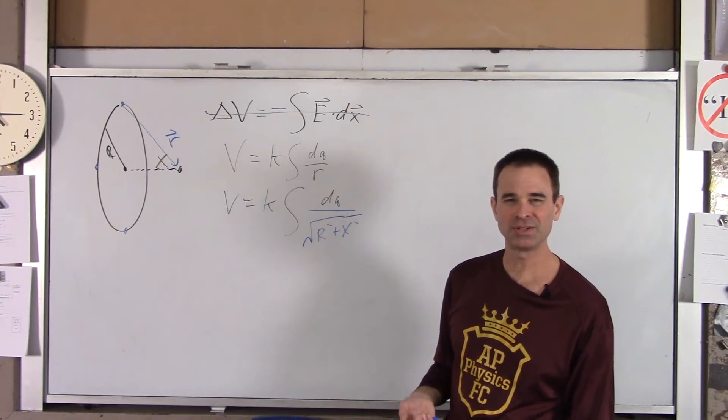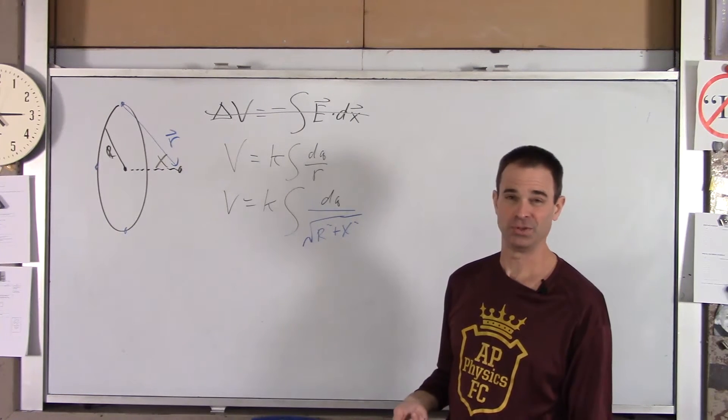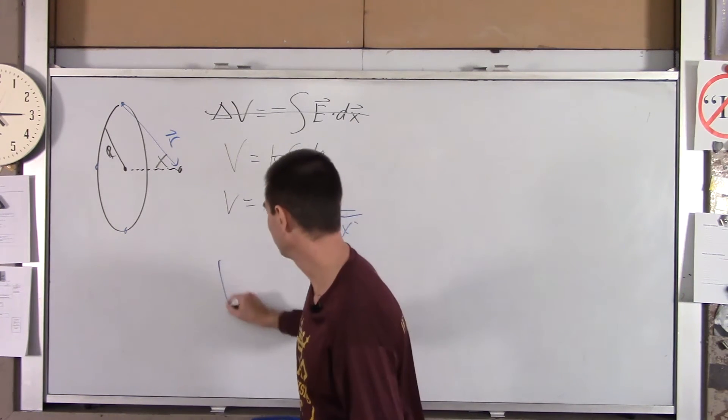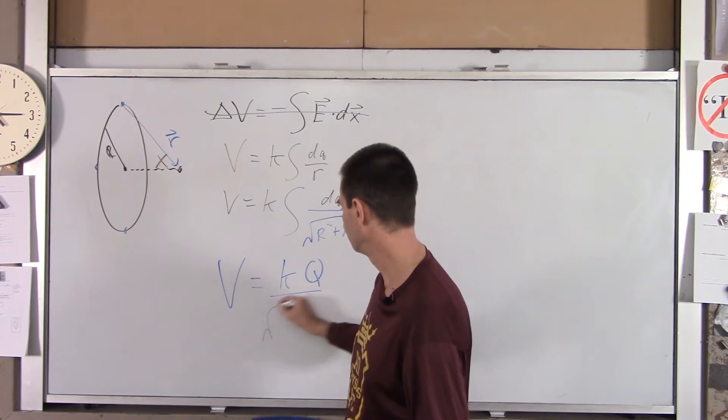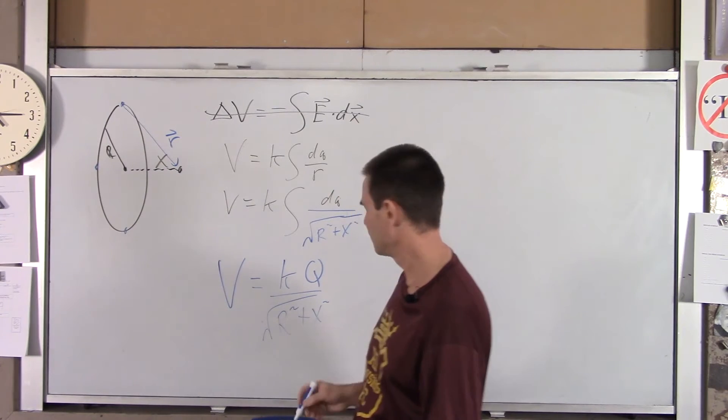So the only variable is DQ. Well, what's the integral of DQ? It's just Q. So the voltage created by the ring is simply KQ over root R squared plus X squared.